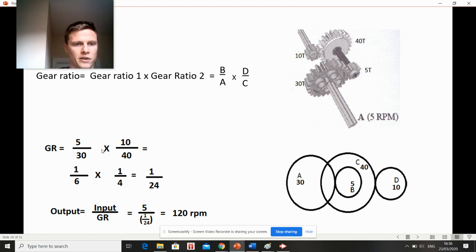To get our overall gear ratio, if you bring this down here, you've got 1 over 6 - that's 5 into 5 is 1, 5 into 30 is 6. This one here, 10 into 10 is 1, 10 into 40 is 4. So 1/6 times 1/4, multiply 6 by 4, you get 1 over 24.